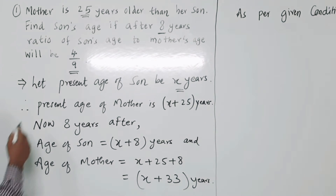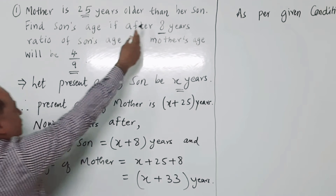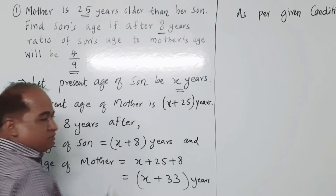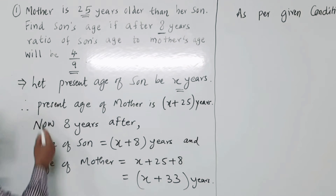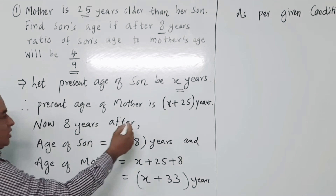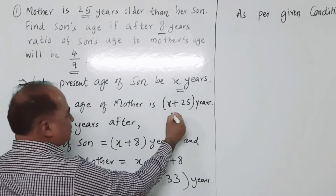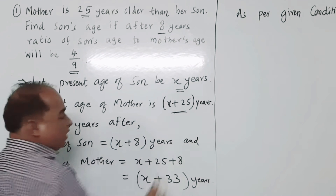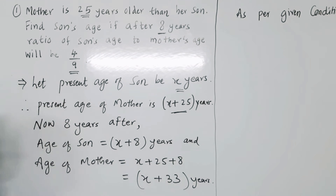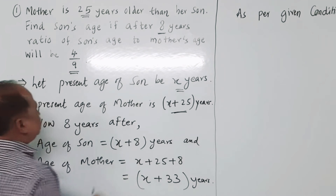Therefore, mother is 25 years older than son. Therefore, the present age of mother is x plus 25 years. Now the condition is about what happens after 8 years.